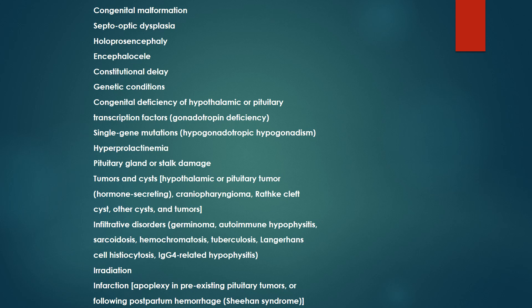Causes include congenital malformation, septo-optic dysplasia, holoprosencephaly, anencephaly, constitutional delay, genetic conditions, congenital deficiency of hypothalamic or pituitary transcription factor, single-gene mutations of hypogonadism, hypoprolactinemia, pituitary stalk damage, tumors with cysts, hypothalamic or pituitary tumors, craniopharyngiomas, Rathke cell cysts, infiltrative disorders like germinoma, autoimmune disease, hypophysitis, sarcoidosis, hemochromatosis, tuberculosis, Langerhans cell histiocytosis, IgG-related diseases, hypophysitis, irradiation, infarction following postpartum hemorrhage, and Sheehan syndrome.